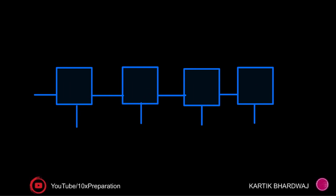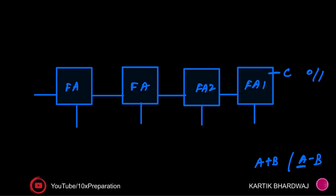Coming back to our problem: we need to check for overflow and perform either addition or subtraction depending on signal C. We use four full adders — FA1, FA2, FA3, and FA4. The A inputs are connected directly: A0, A1, A2, and A3, since A is always going to be positive. We then need to select whether B is positive or negative based on the value of C.